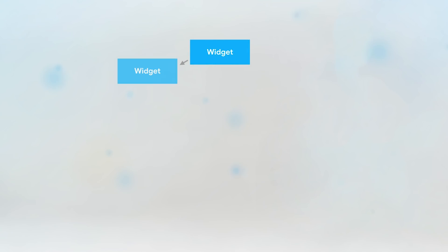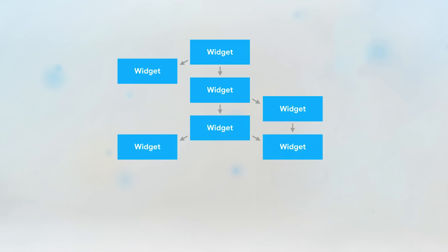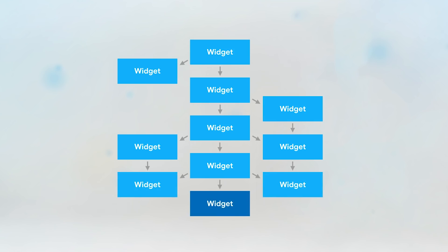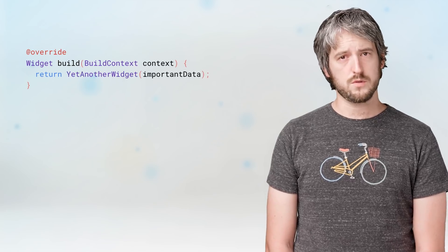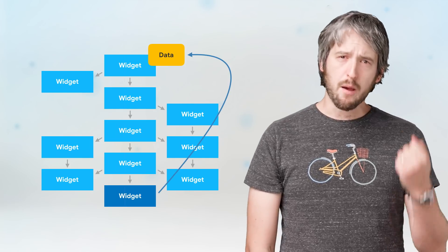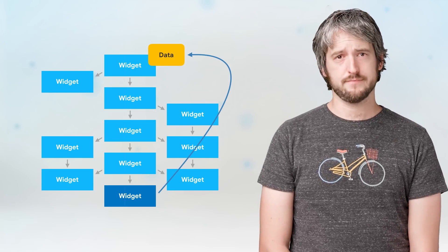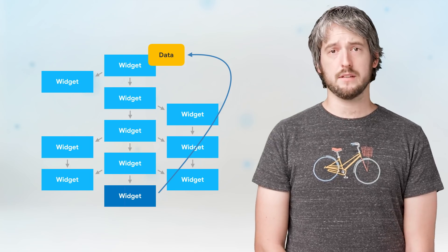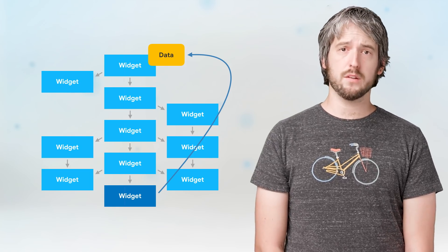When your app gets larger and your widget tree gets more complex, passing and accessing data can get cumbersome. If you have four or five widgets nested one after the other, and there is a piece of data you need to get from the top to the bottom, you're adding it to all those constructors and all those build methods. I just want to reach up the tree to get that data. Fortunately, there's a widget type that allows just that — it's called inherited widget.